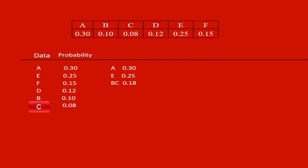Clearly, A has the probability of 0.3, hence it comes at the top. C has 0.08, therefore it comes at the end.